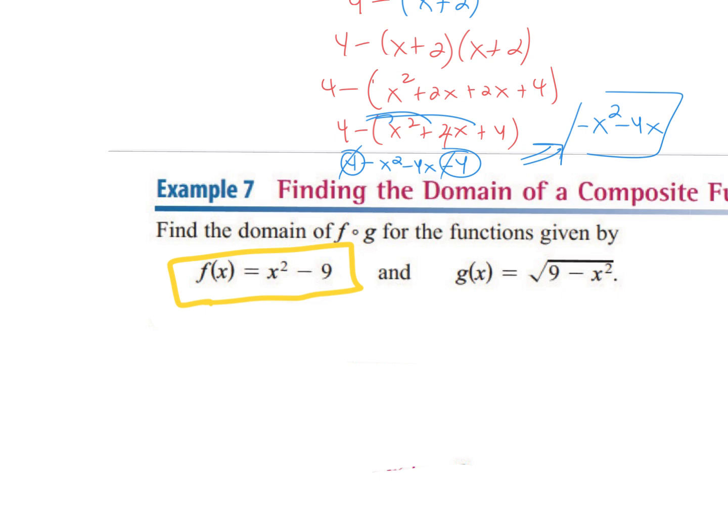Can I plug in a positive number, square it, and subtract 9? Yes. What about a negative number? Yes. What about 0? Everything's okay, so the domain for that function is negative infinity to positive infinity — I can use anything. But do I have a problem with a square root? You can't have a negative underneath the square root because it becomes imaginary, so there are domain restrictions.